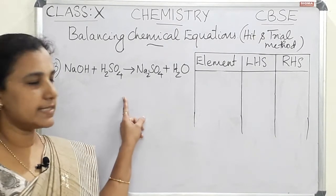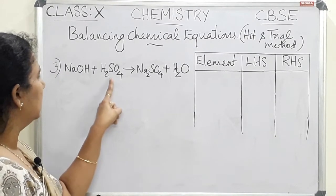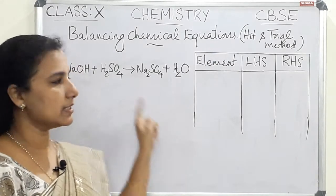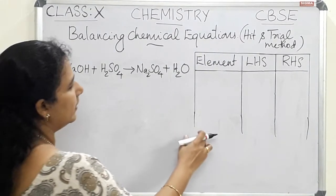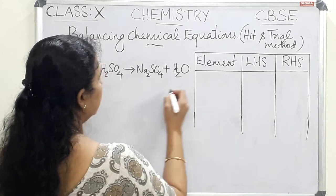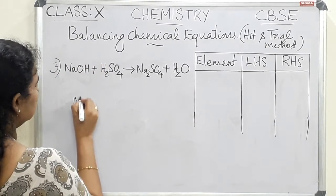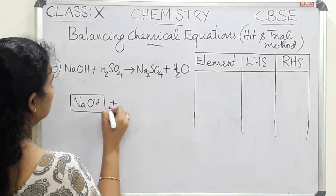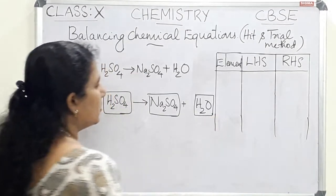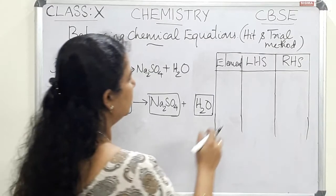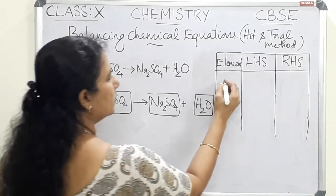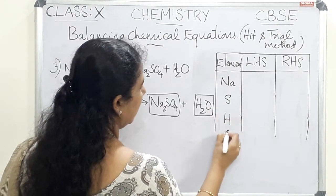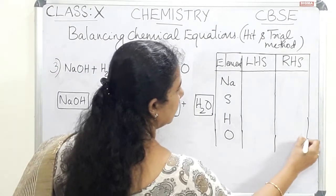The third example is sodium hydroxide (NaOH) plus sulfuric acid (H₂SO₄) gives sodium sulfate (Na₂SO₄) plus water. This is an unbalanced equation. We draw boxes for each substance and set up columns. The elements present are sodium, sulfur, hydrogen, and oxygen.